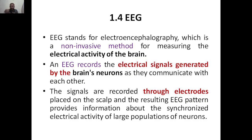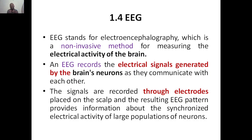When signal transmission is happening from one neuron to another, we can determine whether the brain's activity is proper or not. If signals are flowing properly, we can say that the brain is active. Brain activity is understood through the electrical impulses generated by neurons during signal transmission. These signals are recorded through electrodes — the probes placed on our scalp receive these particular signals.